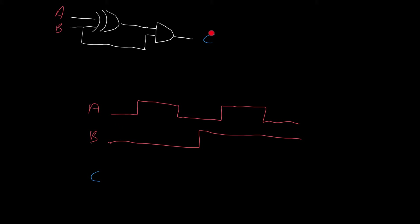We're given the inputs and we want to know what the output C is. The first thing we do is look to see when the inputs change — we see that an input changes at this time instance, at this time instance, at this time instance, at this time instance, and at this time instance. The output C can only change when one or more of the inputs changes, so we only have to figure out what's happening on either side of these yellow lines. Between these yellow dotted lines, the output C has to be constant.